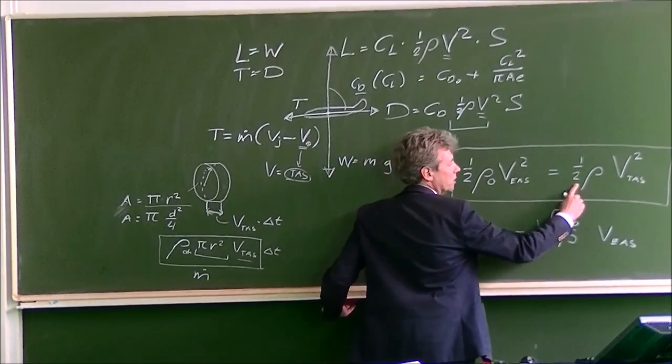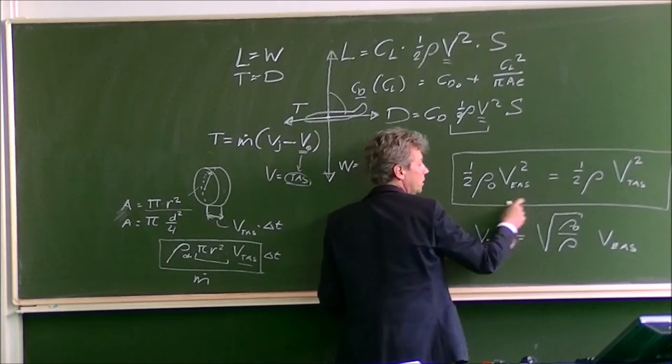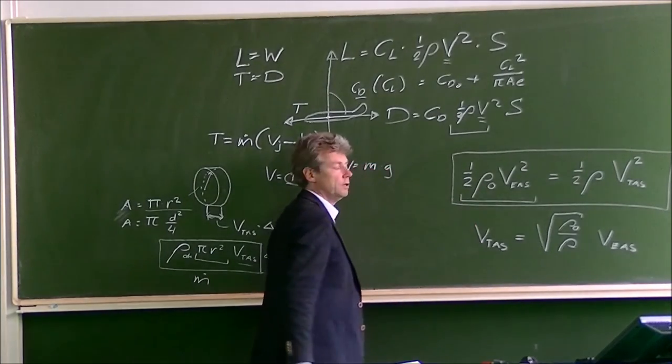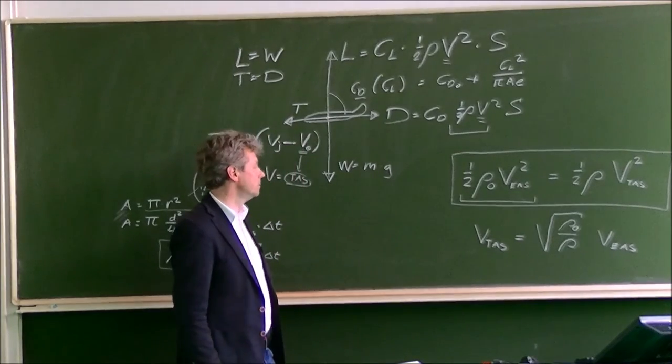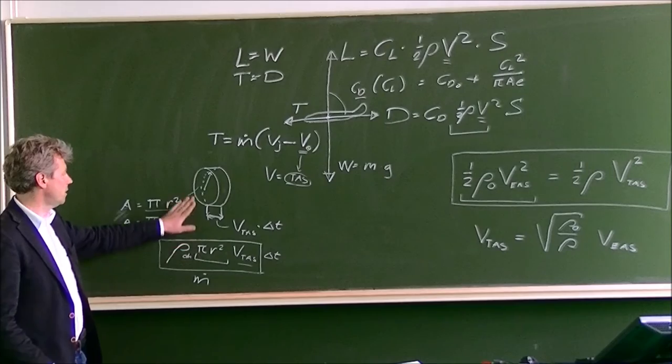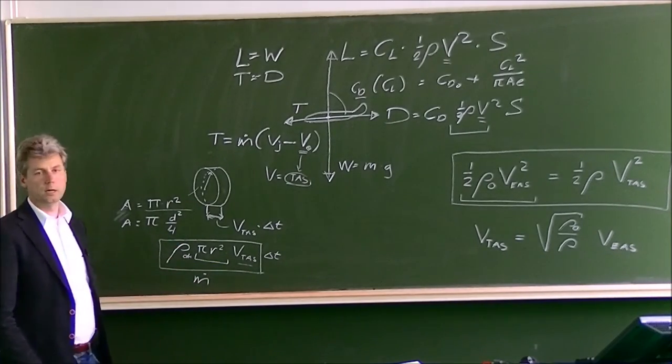Of course, instead of using half rho times the true airspeed squared everywhere, you can of course also use this, as long as you then use the air density at sea level. But for these kind of equations, the mass flow, you always have to use the true airspeed and the true air density.